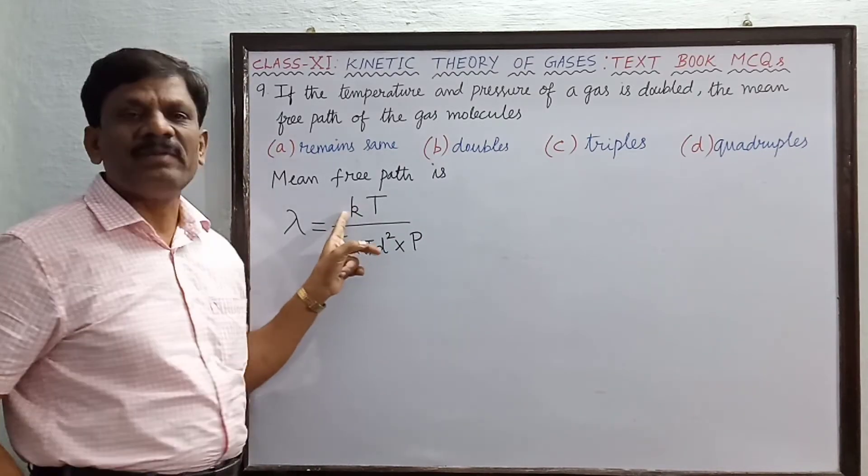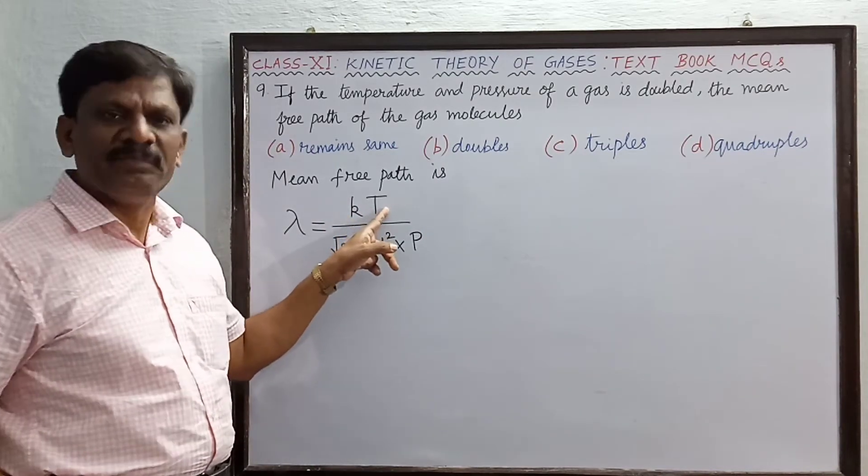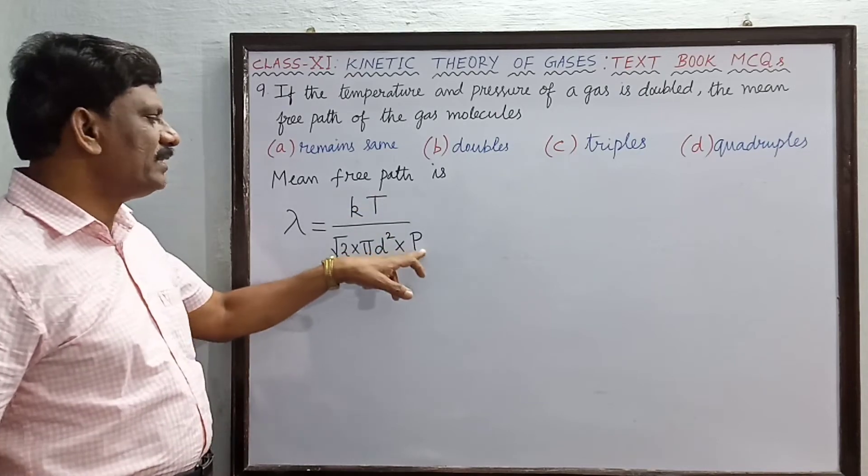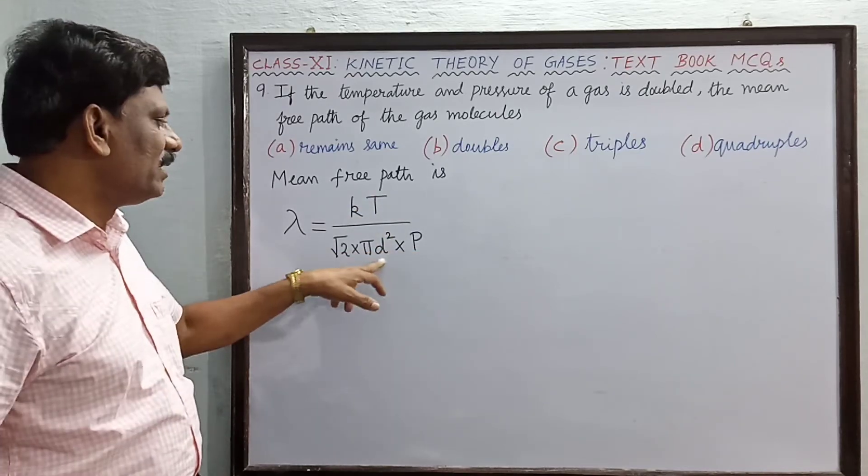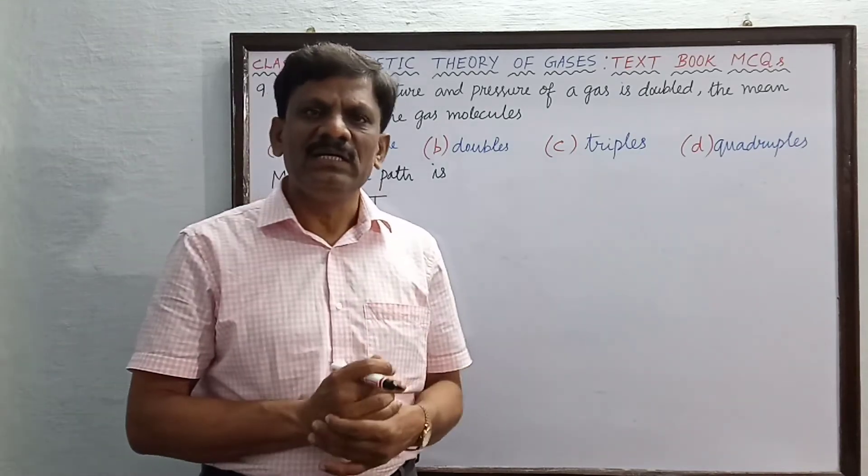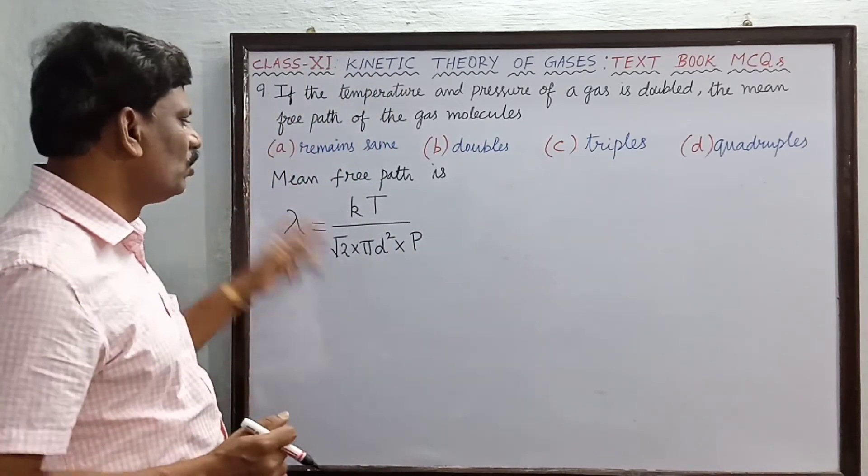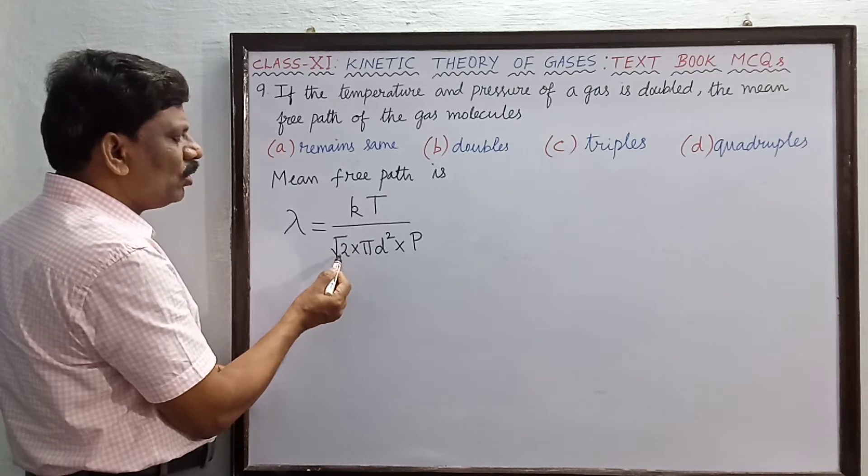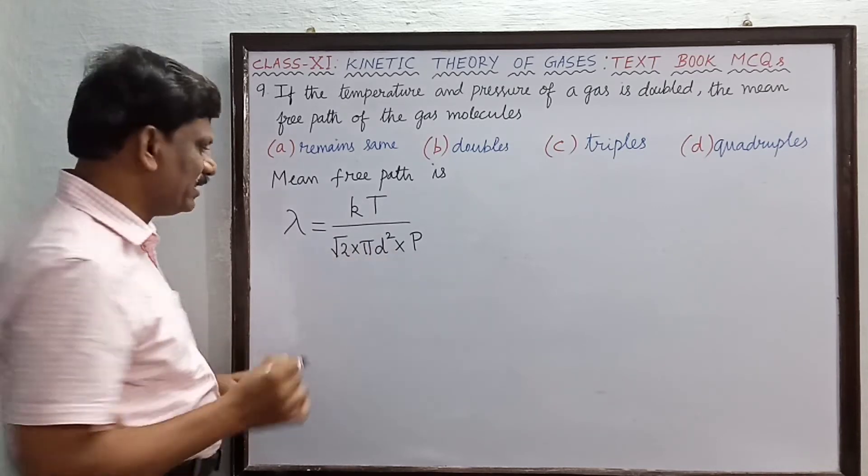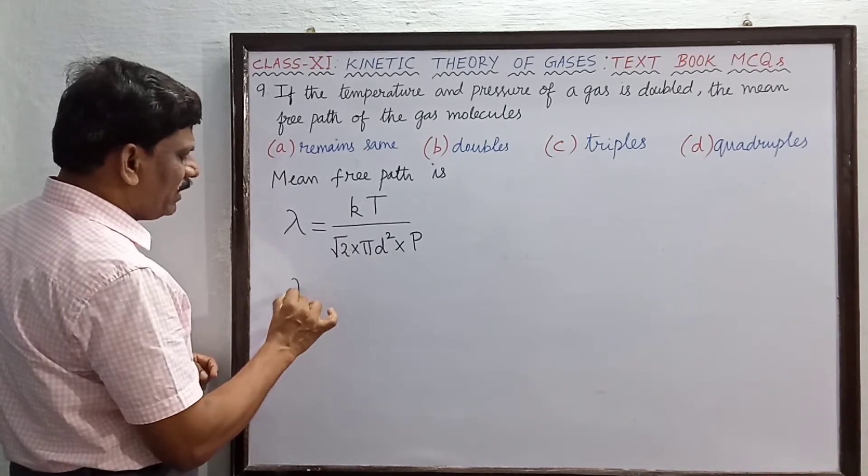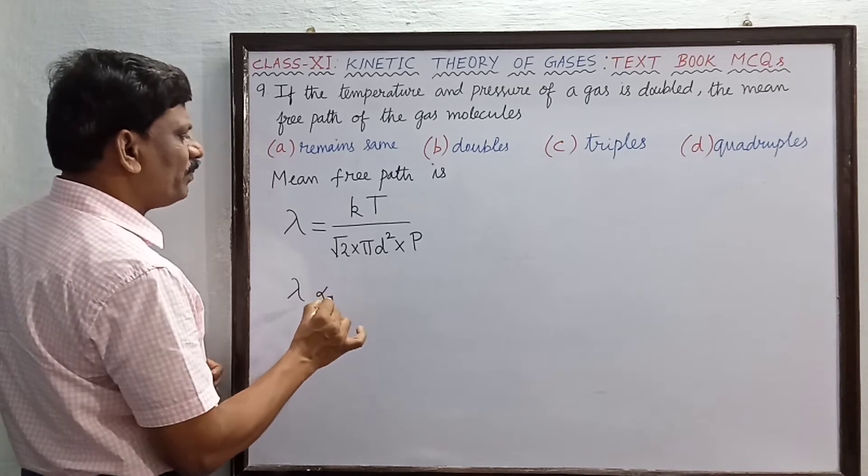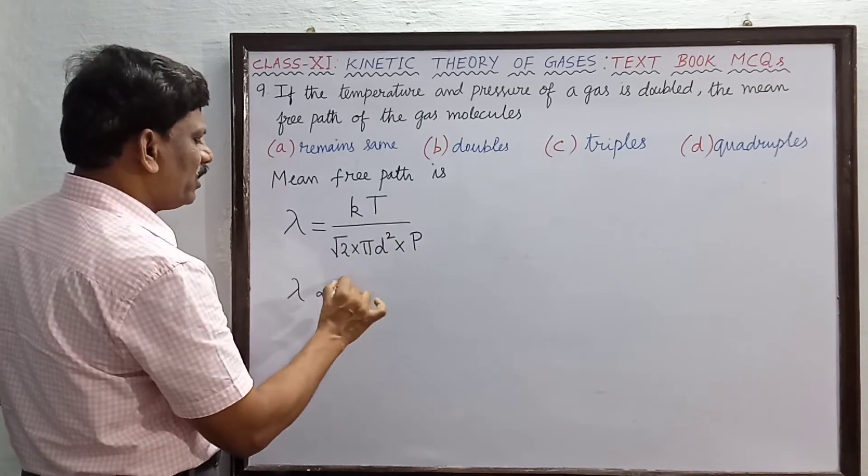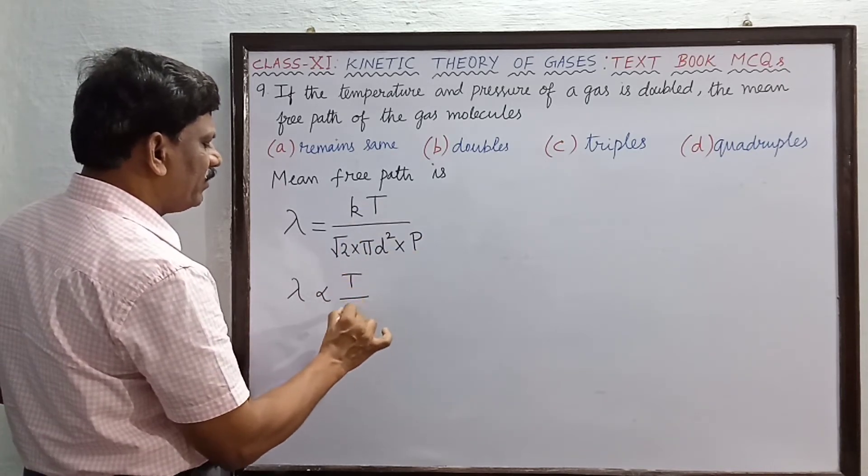k is the temperature of the gas, P is the pressure of the gas, d is the diameter of the gas molecule, and root 2 constant. So k is constant, root 2 pi d square is a constant, so lambda is proportional to T divided by P.